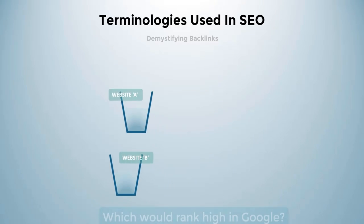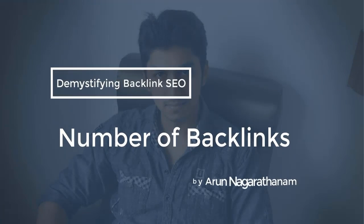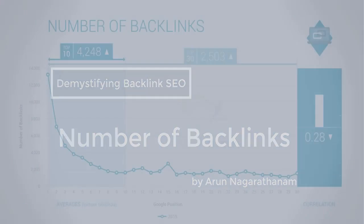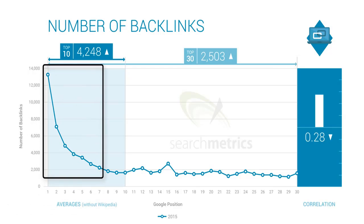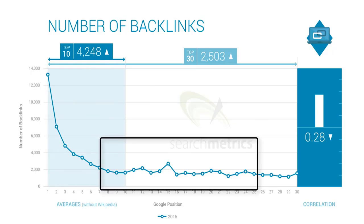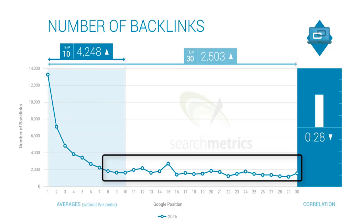Let me ask you a simple question. Website A has got 1000 dofollow backlinks and website B has got 10 dofollow backlinks — which website would rank higher on Google? Let's start with 2015 research data. Forget all the numbers; just concentrate on the graph alone. From the first search result to the seventh, there's a considerable difference in number of backlinks. But from the eighth to the thirtieth, almost all of them have a similar number of backlinks.